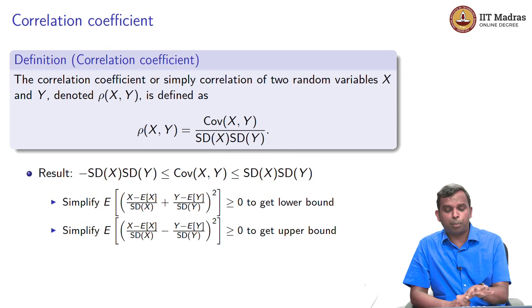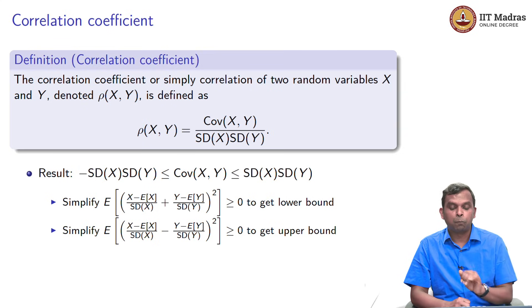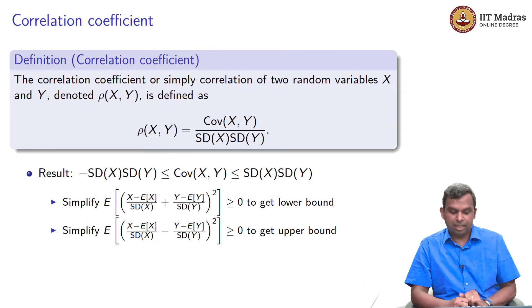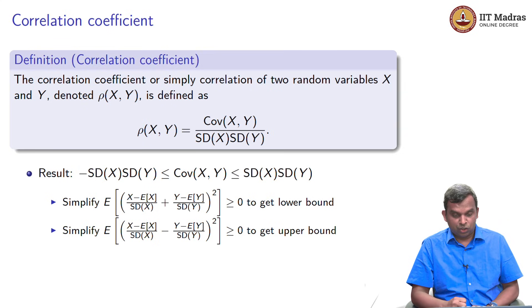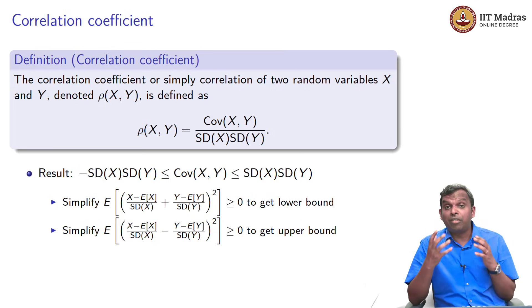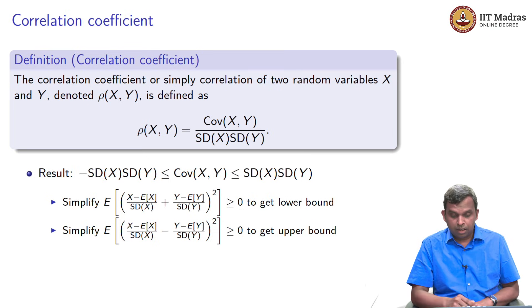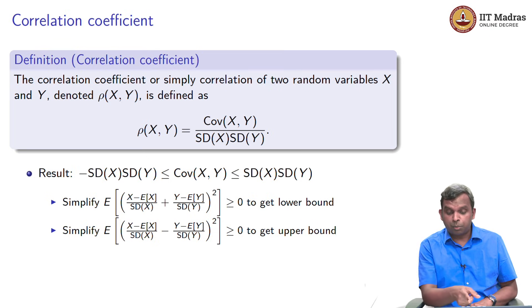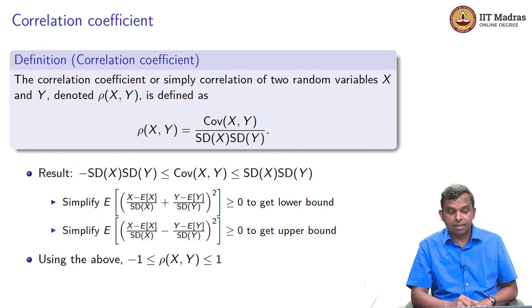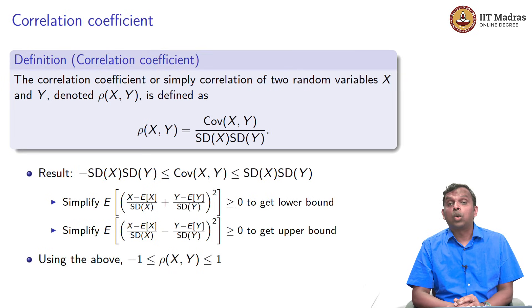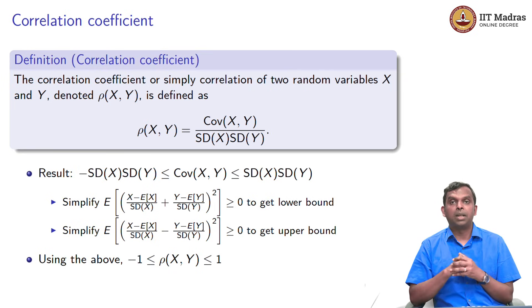This is just the expected value of a positive random variable being positive. Use that and you can get it — I will leave this as an exercise. Because of this property of covariance, you know that the correlation coefficient is between minus 1 and 1.